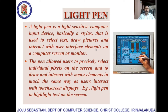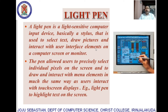The next input device is the light pen. It is used by users to interact with touch screen displays, for example to highlight text on the screen. It is a light-sensitive computer input device — basically a stylus used to select text, draw pictures, and interact with user interface elements on a computer screen or monitor. The pen allows users to precisely select individual pixels on the screen and draw and interact with menu elements, much like interacting with a touch screen.